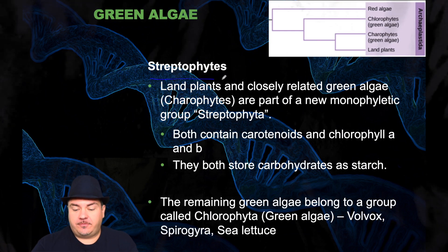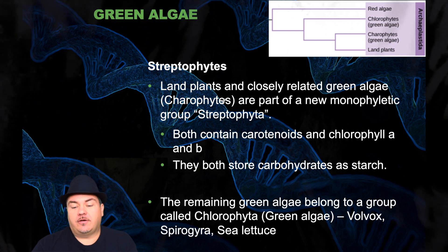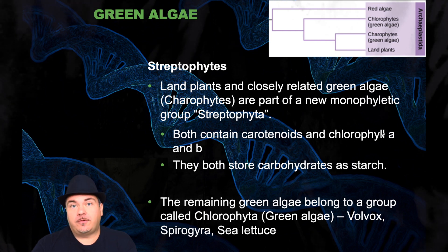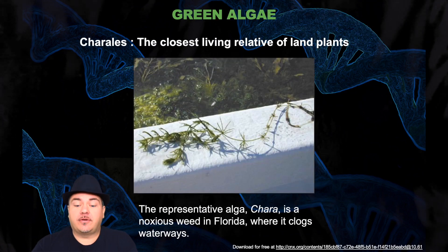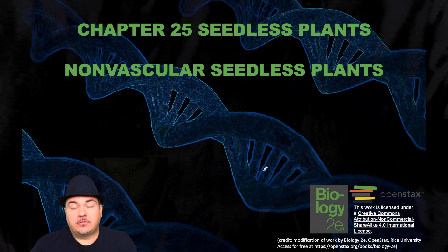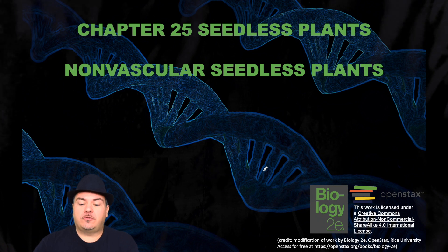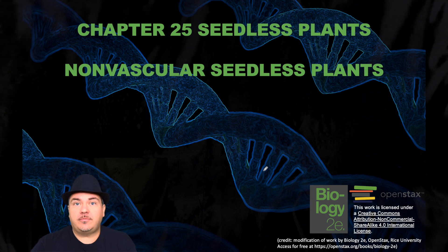The streptophytes are the charophytes plus the land plants, so land plants are closely related to green algae and are part of a monophyletic group called Streptophyta. Both the charophytes and the land plants contain carotenoids and chlorophyll a and chlorophyll b, and both store carbohydrates as starch. The remaining green algae belong to a group called Chlorophyta. That was your brief introduction to plants. In the next video lecture we'll discuss the non-vascular seedless plants in detail, then the vascular seedless plants, and in the next chapter the seed plants. Until next time, this has been Dr. Sage.